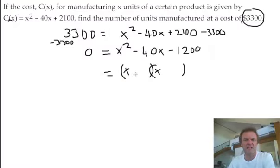Apparently it's difference of, oh, 60 and 20. Yeah, 60 times 20. Okay, so 60 times 20 is 1200 and the difference of 60 and 20 is 40. So it's negative 60 and positive 20.